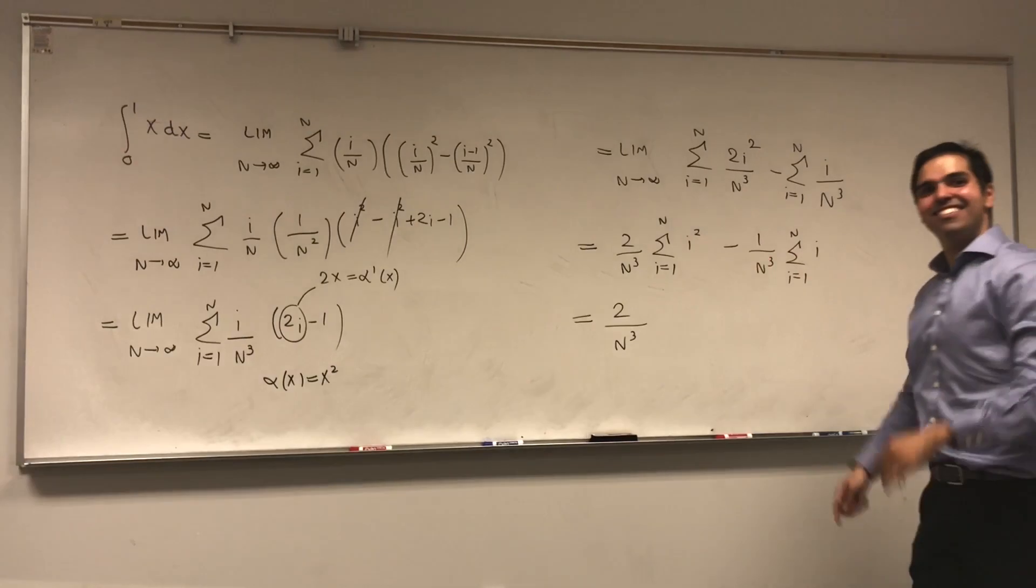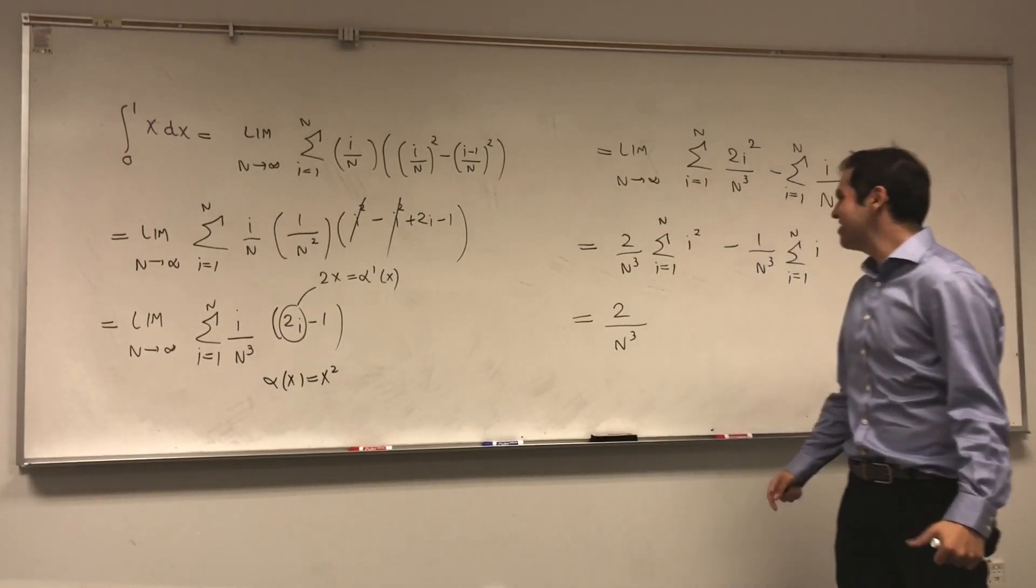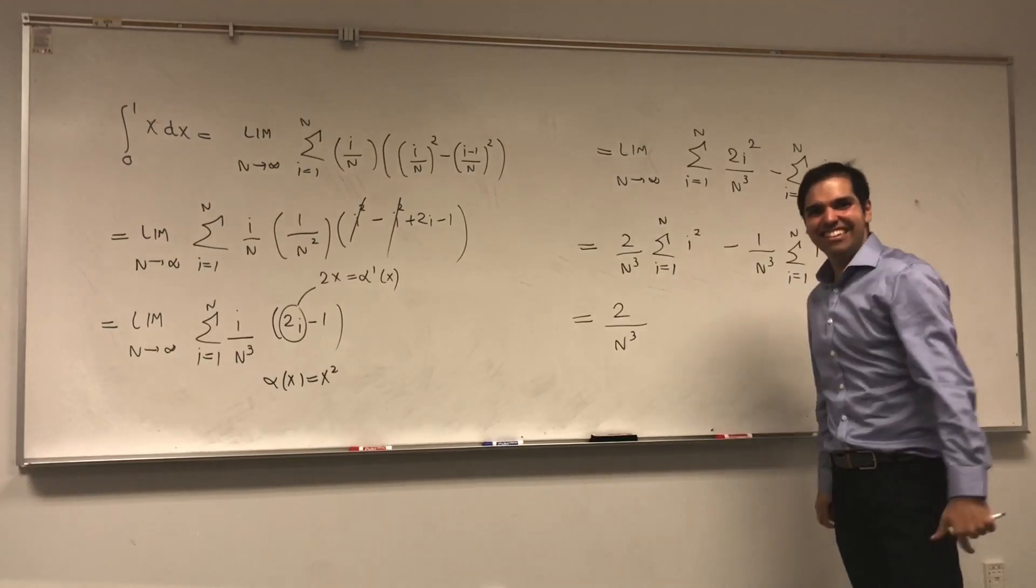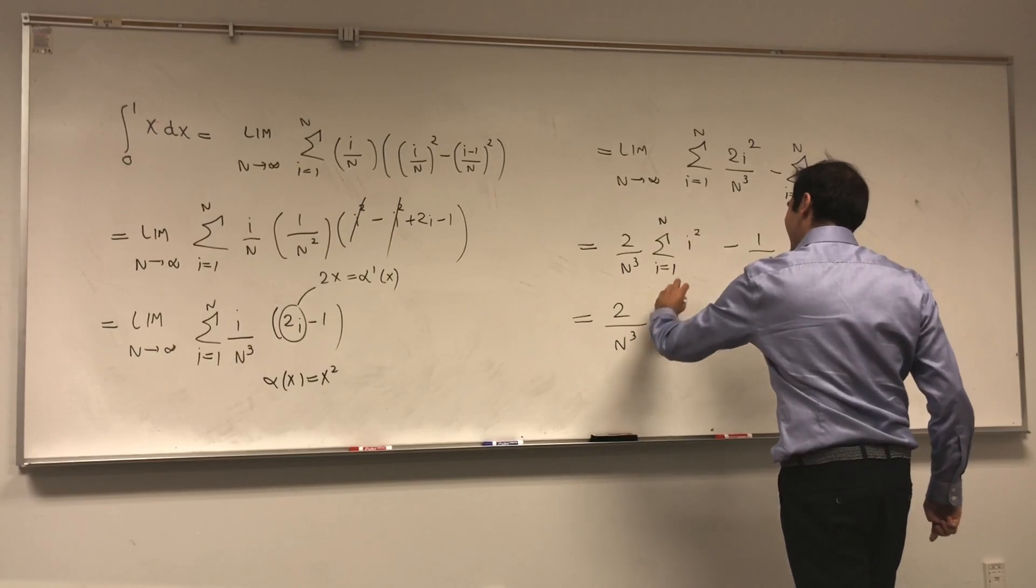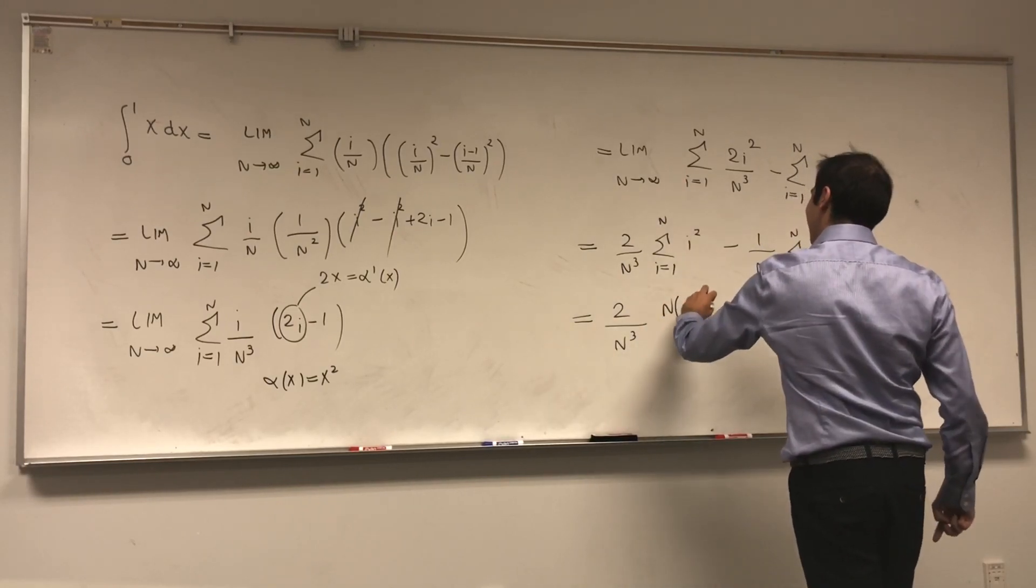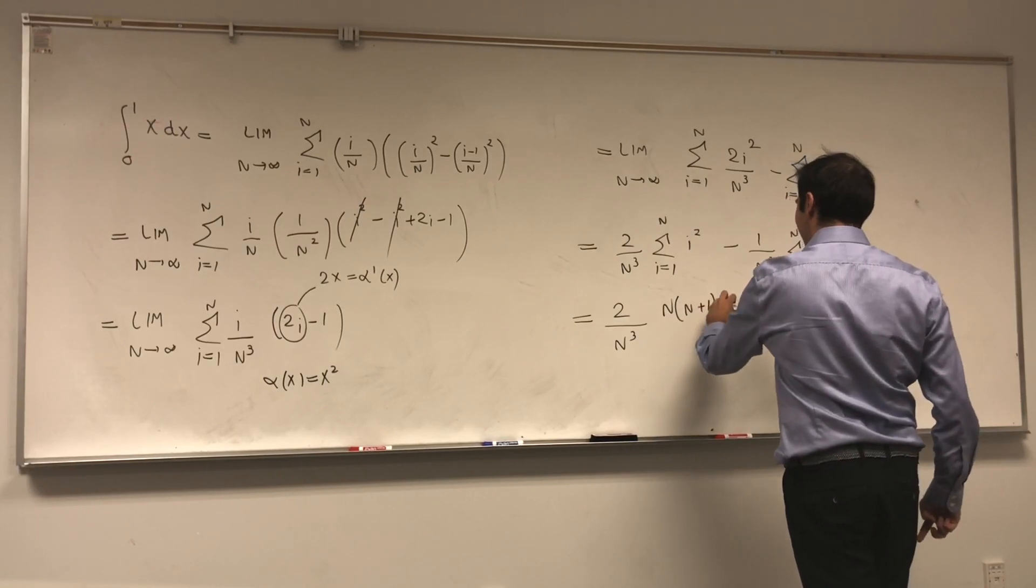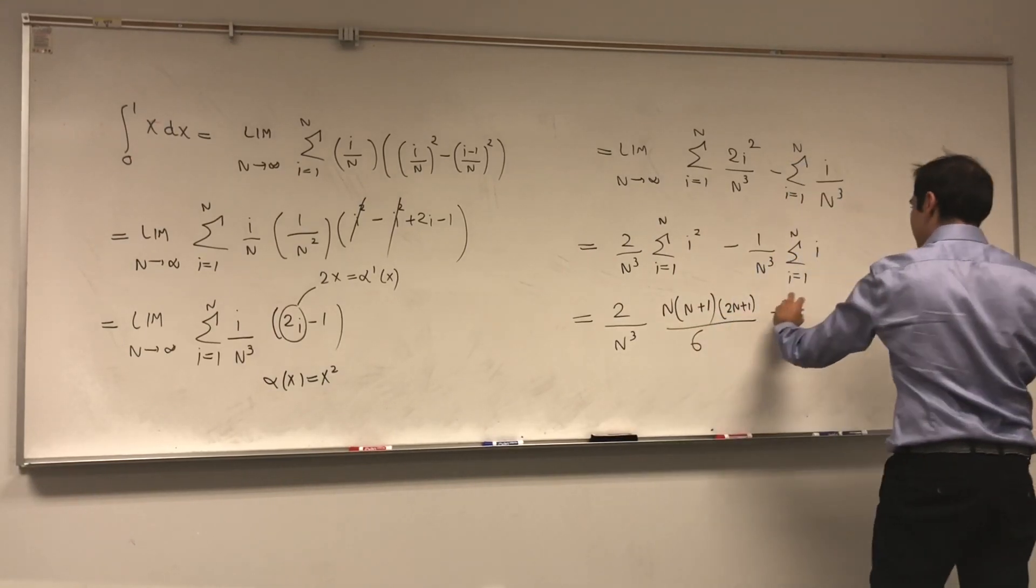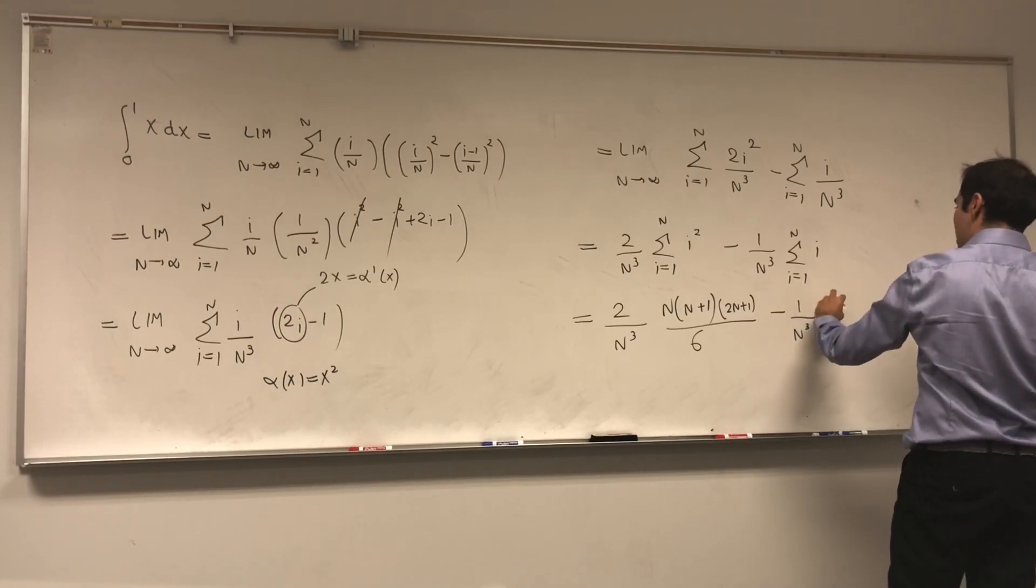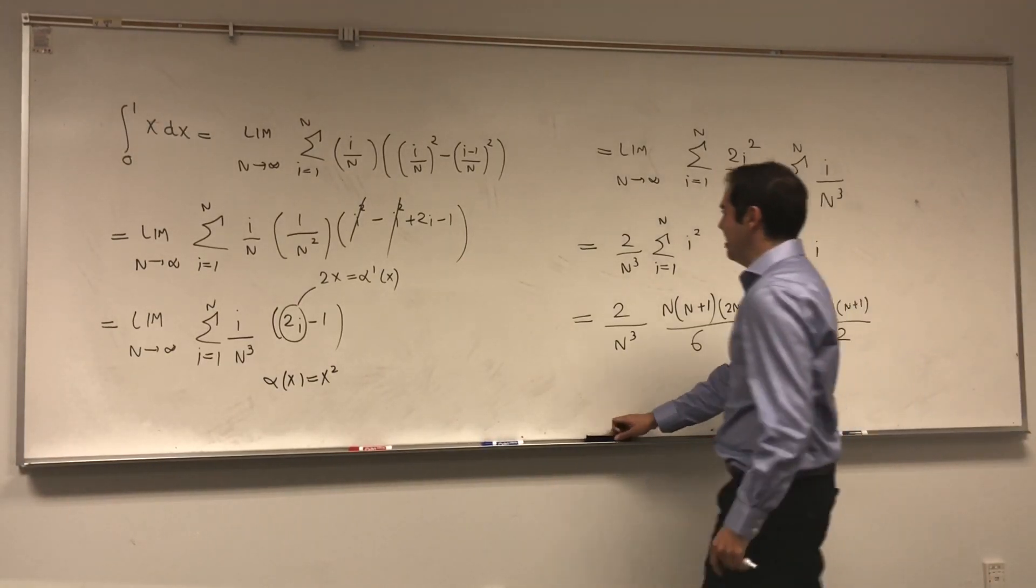And that's 2 over n cubed. And again, those are facts. You can ask Max for those facts. He's very good at those. By the way, Max got into UC Berkeley. I'm so happy for him. Okay, so go bears. So this sum turns out it's n times (n+1) times (2n+1) over 6 minus 1 over n cubed. So this sum is n times (n+1) over 2.